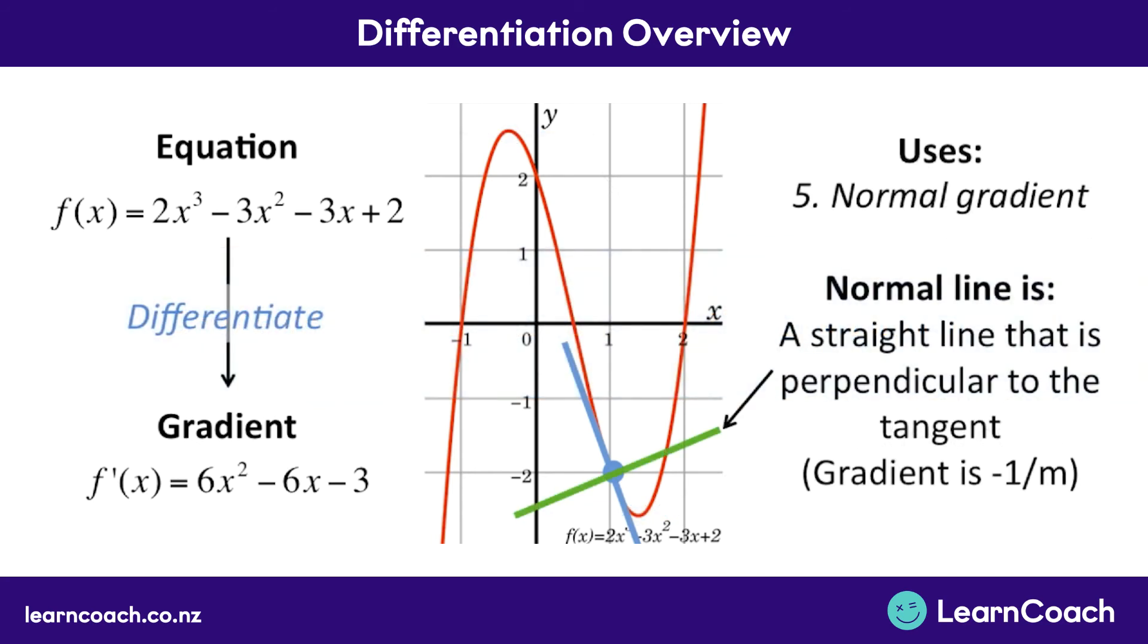The final use we need to know is that a normal line is something that is 90 degrees to a tangent, and we need to know how to get the gradient of that sometimes. The gradient of a normal line, which I've drawn on the graph here, is the negative reciprocal. That means, take the gradient of the tangent, which you know how to do now, flip it upside down in a fraction, or do negative one divided by that fraction.